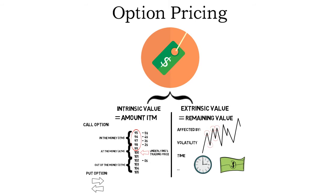So to sum up: intrinsic value plus extrinsic value equals the option's price. Note that out-of-the-money options don't have intrinsic value, and some very deep-in-the-money options don't have extrinsic value either. Additionally, it is important to understand that option prices are not constant — they change all the time. For example, if the price of the underlying changes, the intrinsic value changes as well. Or if some days pass, there is less time left until expiration and therefore the extrinsic value can become smaller. Volatility can also change, creating more opportunities and making option prices rise.